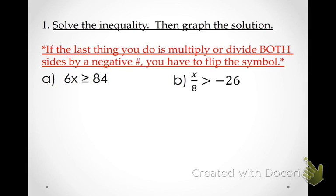The goal: identify the variable and get it by itself. What's my variable? X. I need to get X by itself. What is not allowing X to be by itself? 6. What operation goes with that 6? It says times 6. What's the opposite of times 6? Divide by 6. What I do to one side, I must do to the other. What happens to 6X over 6? It becomes 1X.